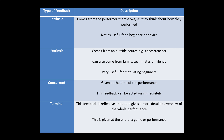Feedback is either intrinsic or extrinsic, and also either concurrent or terminal. For example, a runner's coach could shout from the sidelines that they need to up their pace during a race. This feedback is both extrinsic, because it comes from an outside source, and concurrent, because it's happening during the race.